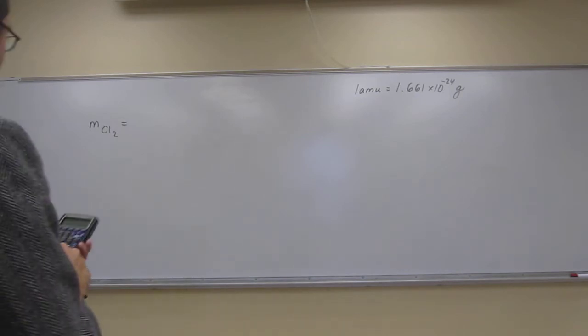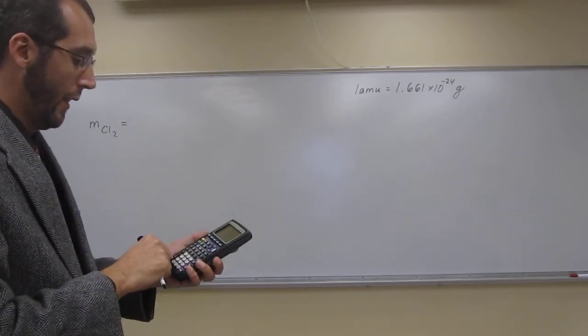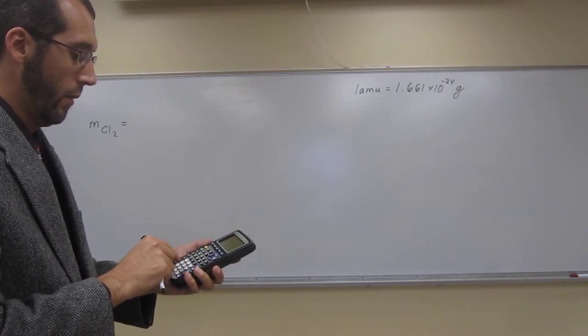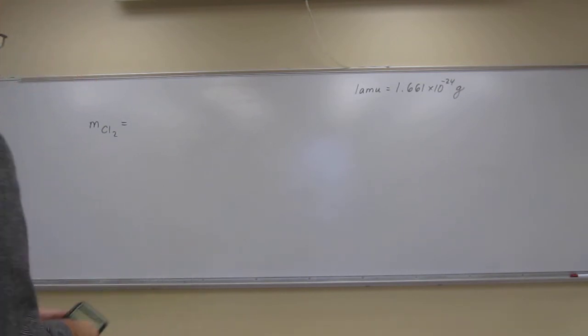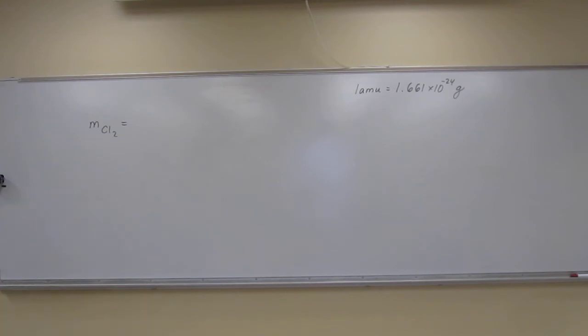So what do we have to do? Multiply that by 2. So 35.45 times 2, now we get 70.90.